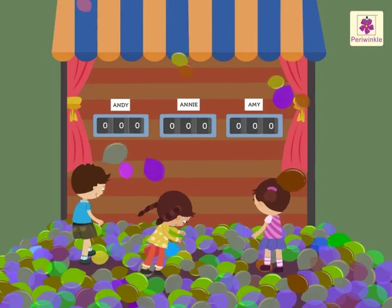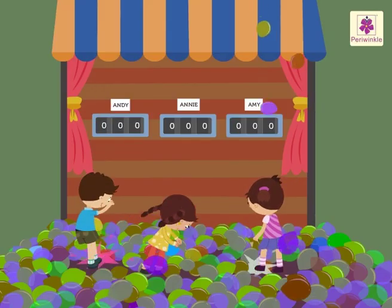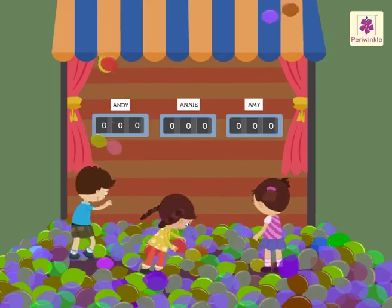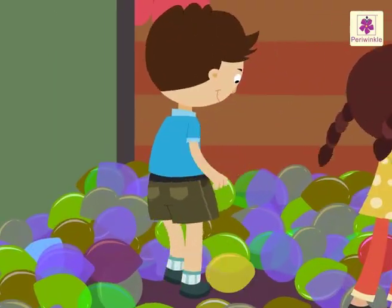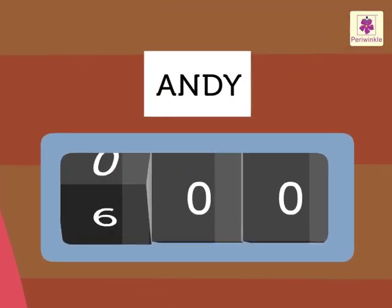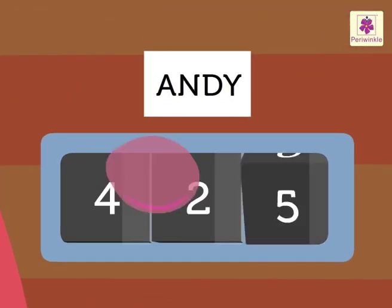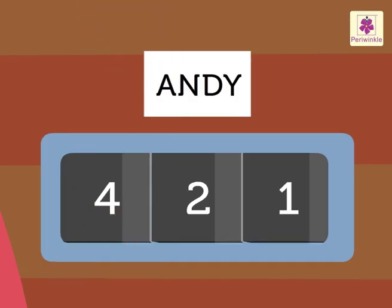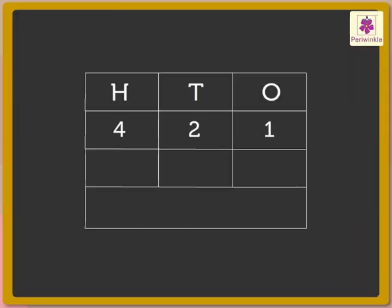Look at the kids playing the bursting balloons game. Andy has burst 421 balloons in all. Digit 1 is in the ones column. Digit 2 is in the tens column. And digit 4 is in the hundreds column.